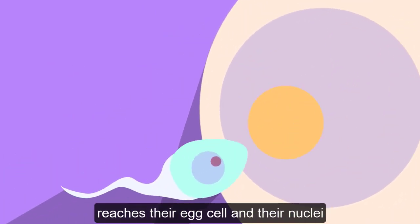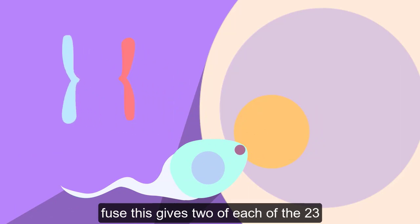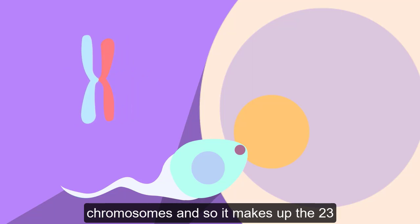When one sperm reaches the egg cell and their nuclei fuse, this gives two of each of the 23 chromosomes, and so makes up the 23 pairs and 46 chromosomes in total.